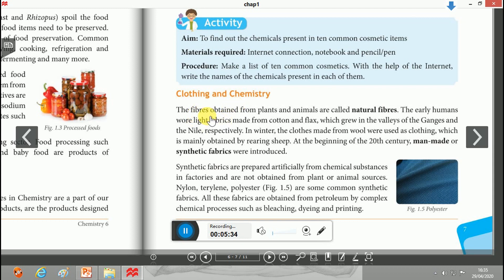Next is Clothing and Chemistry. The fibers obtained from plants and animals are called natural fibers, for example cotton and flax. These are obtained from plants and animals. The early humans wore light fabrics made from cotton and flax.